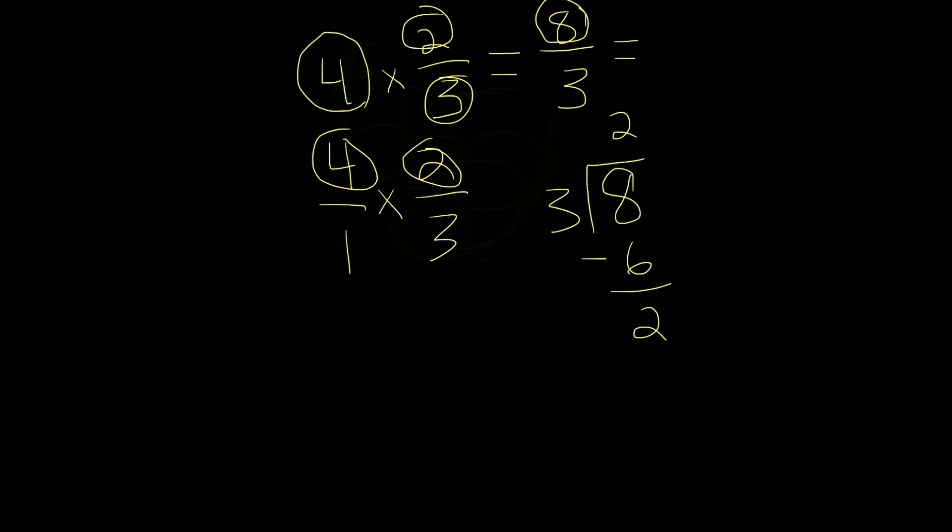So this number here, this is our whole number. We write this over here. And this number here, our remainder, this is our numerator. Over, and our denominator stays the same. So we keep our 3. And this is our answer in mixed number form.